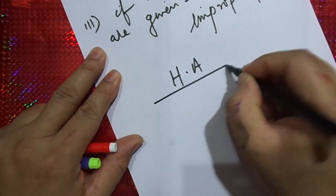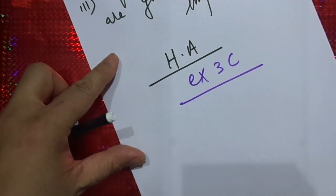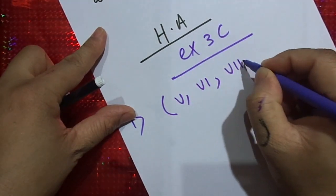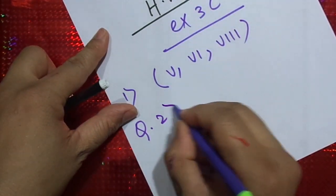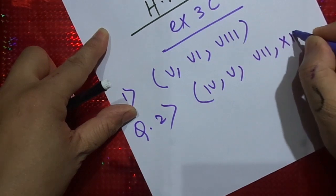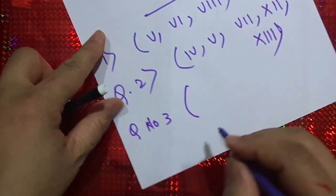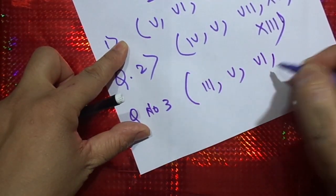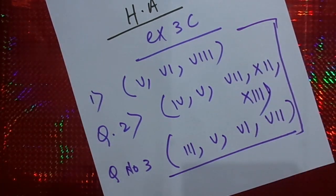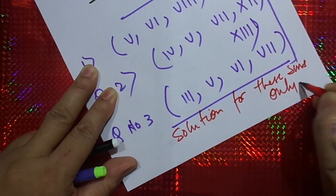Your home assignment, after you copy this in your notebook, will be exercise 3c. In question number 1 you need to do numbers 1, 5, 6, and 8. In question number 2 you need to do numbers 4, 5, 7, 12, and 13 only. While in question number 3, you need to do numbers 3, 5, 6, and 7. I think you can easily do all these, and I will come up with solutions for these sums. Thank you.